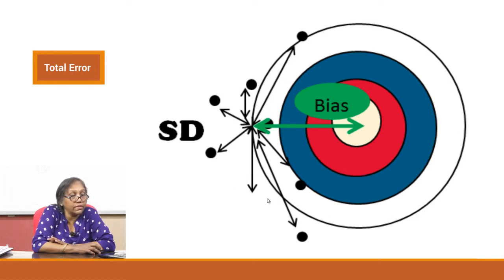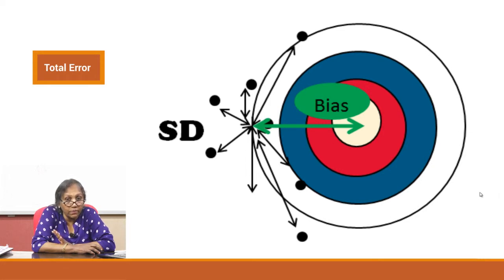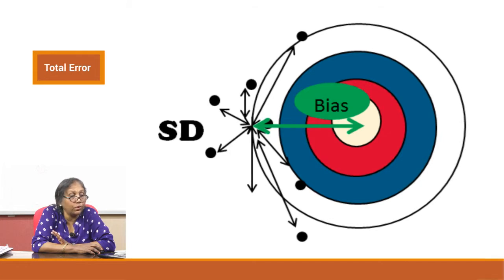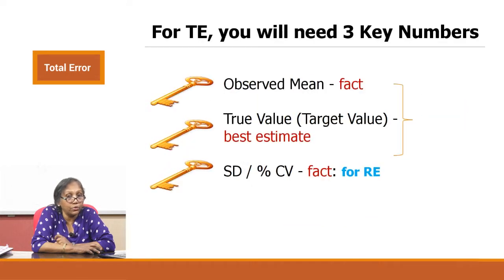This entire number can be expressed as a single number, and that is what we are talking about in total error calculations — inaccuracy plus imprecision adds to your total error. You need 3 key numbers here.